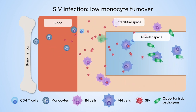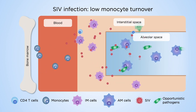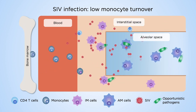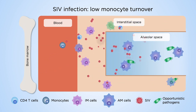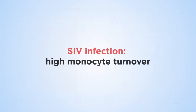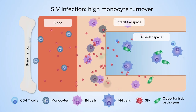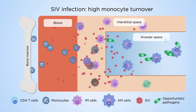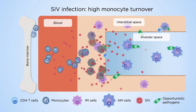As immature lung macrophages become infected and killed, opportunistic infections increase, which is indicative of AIDS. Monocyte turnover increases to maintain blood monocyte numbers. This predicts AIDS onset.